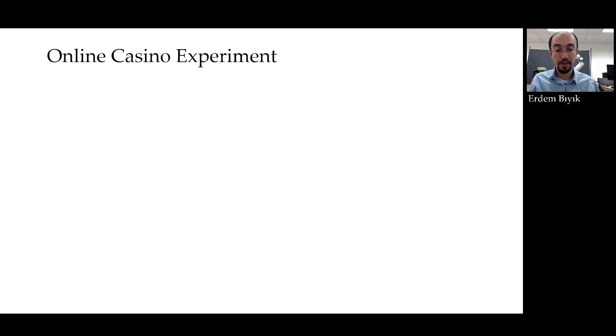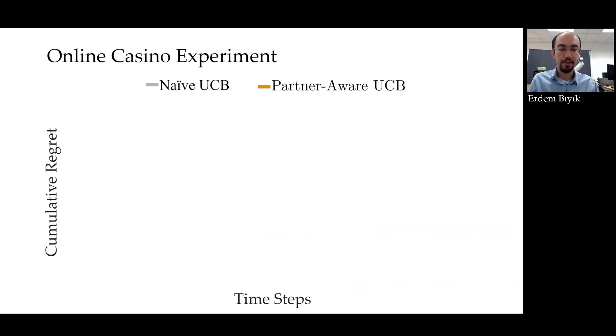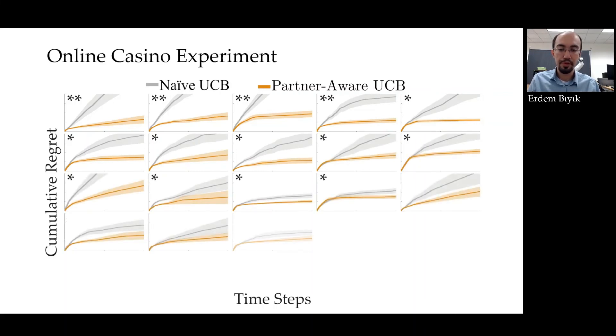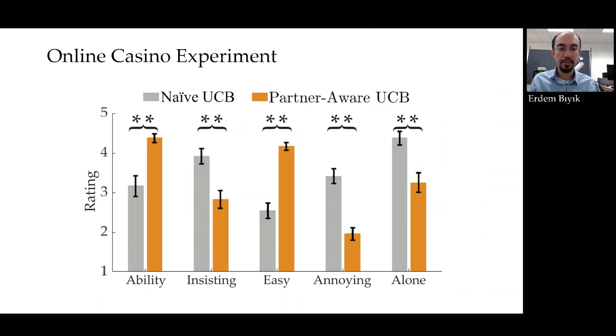To see the effect of partner-awareness in longer-term interactions, like 1000 timesteps, which was not feasible with a real robot, we also designed an online casino experiment. The interface consists of a grid of slot machines, and the participants collaborate with a robot in this game to maximize their earnings. Here again, the robot was the agent with partial observability. Each participant played in 25 different grids, and each game lasted 1000 timesteps. Let me show you the results. Here is a result from one of our users. As you can see, partner-aware UCB achieves significantly lower regret compared to naive UCB. This is the case for almost all of the users. Finally, this last plot shows the average over all users. We run a two-way repeated measurements ANOVA on this entire data, and the difference was again statistically significant. Like before, the participants preferred working with the partner-aware UCB, and in this case, all comparisons are statistically significant.